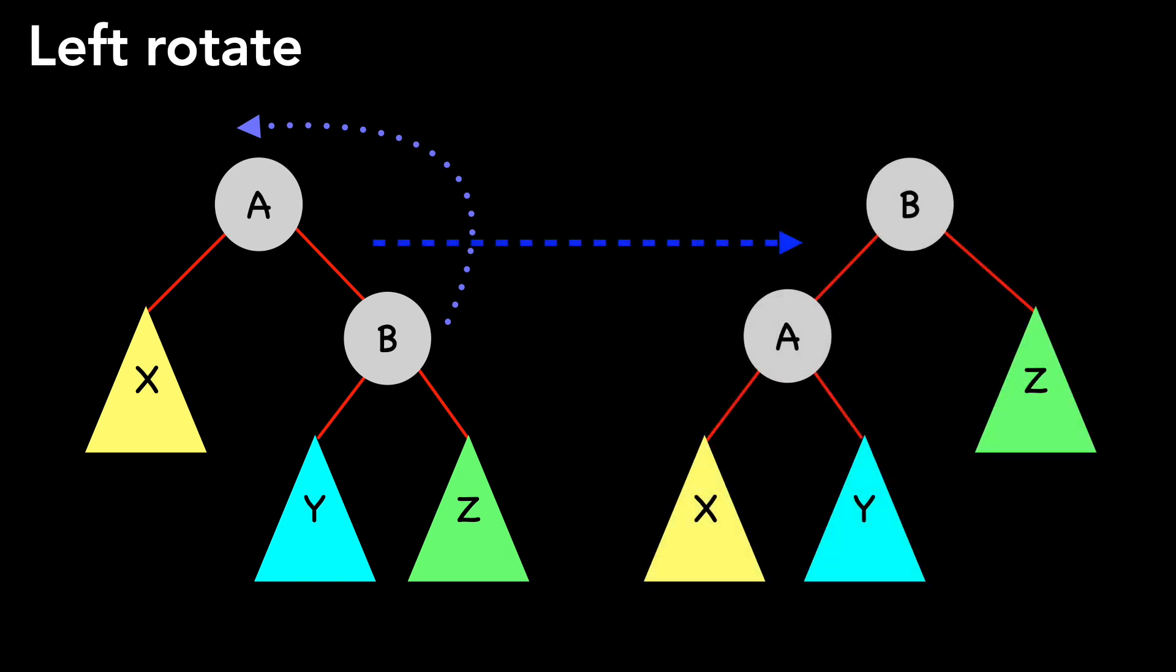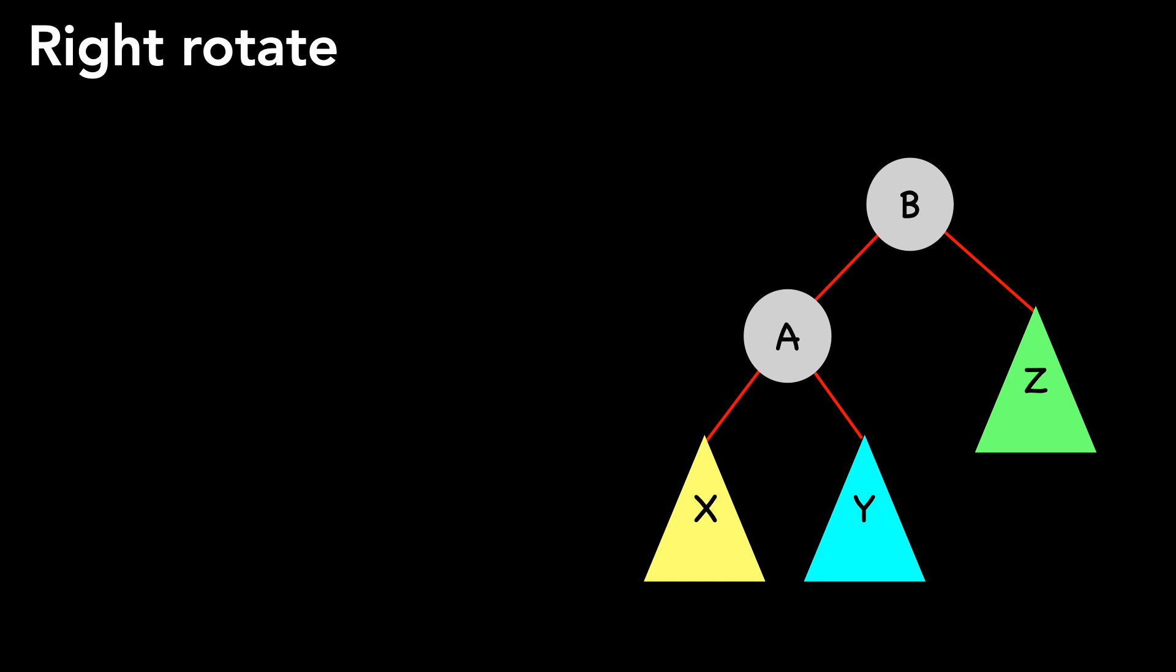Here is the result of a left rotation. This is permissible because we know that the nodes in subtree Y are greater than A, but less than B. Right rotation is the same concept, but just the inverse.